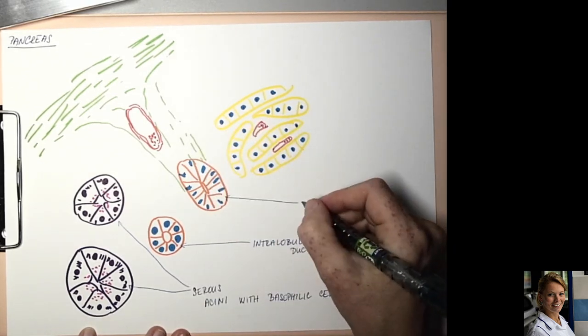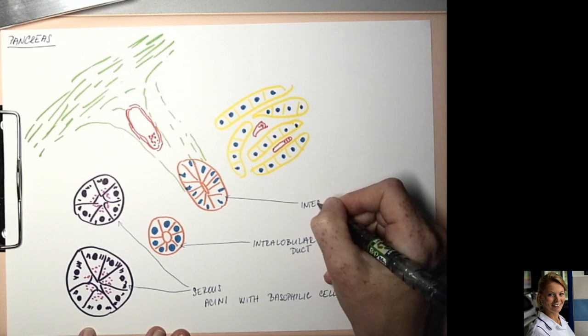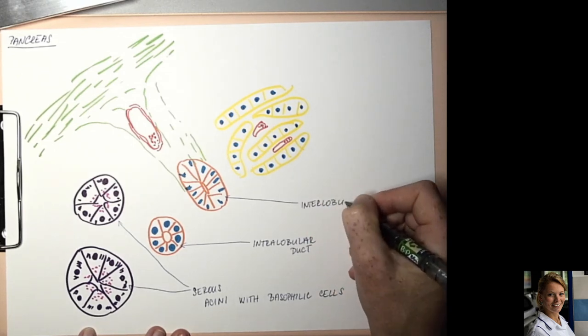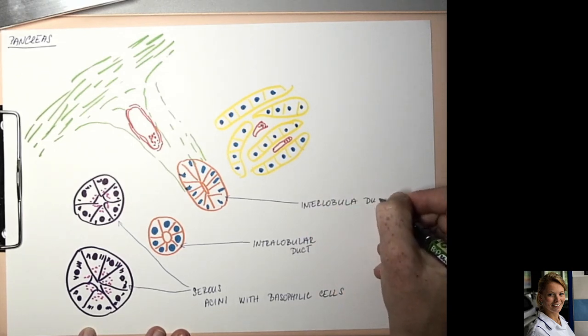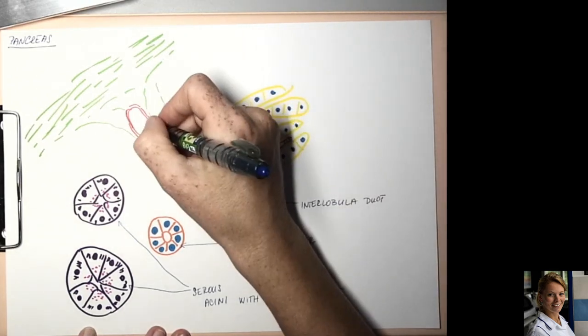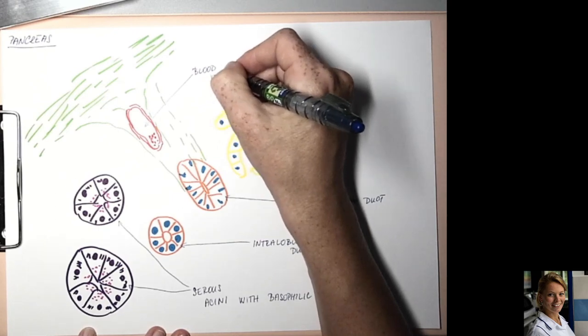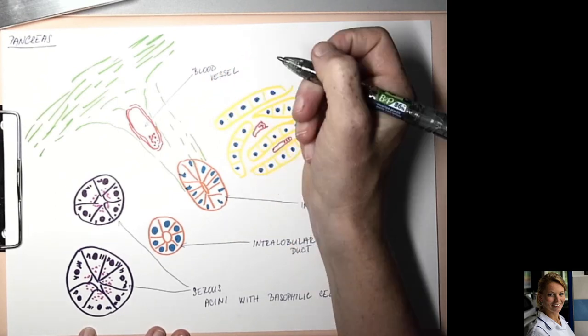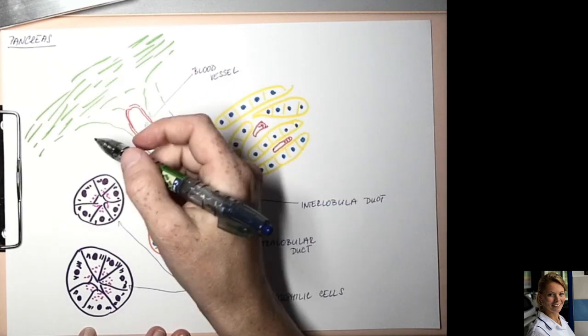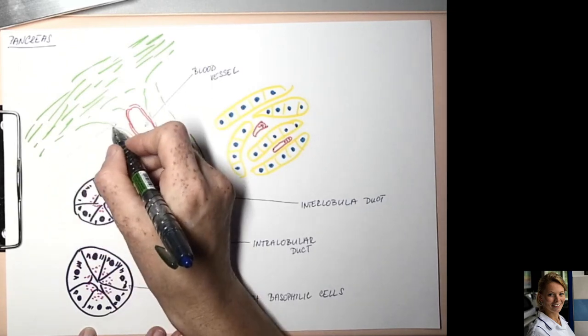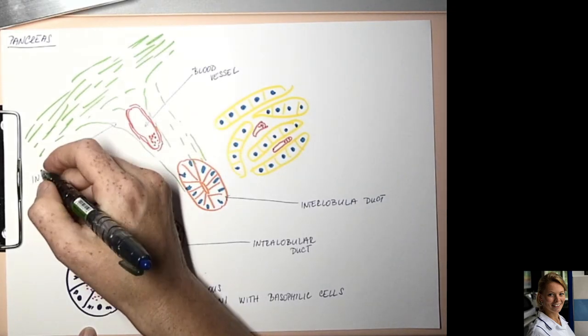Here is an interlobular duct. Blood vessels within the interlobular septum.